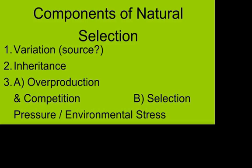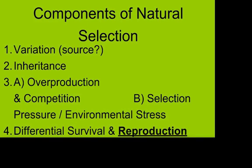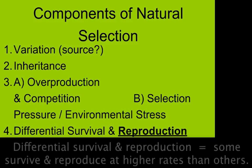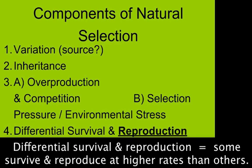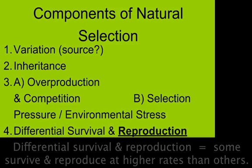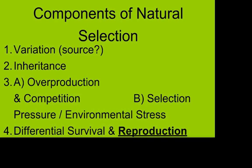If there was no insecticide, this scenario with the flies would not happen. The fourth condition is differential survival and reproduction — meaning some flies are surviving and reproducing at different rates than others. The resistant flies survive and reproduce at a higher rate, while the normal flies survive and reproduce at a lower rate. If they reproduced at an equal rate, this process breaks down.